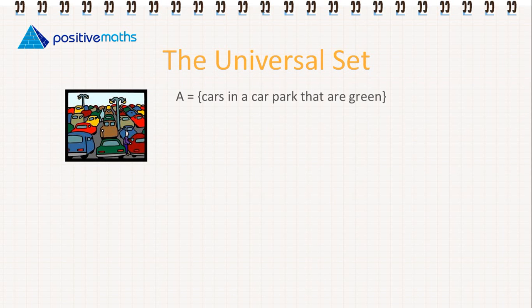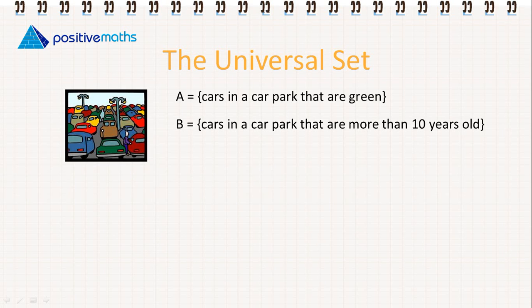So let's look at an example. We have set A: cars in a car park that are green. Set B: cars in a car park that are more than 10 years old. And set C: cars in a car park that are worth less than 2,000 euro.